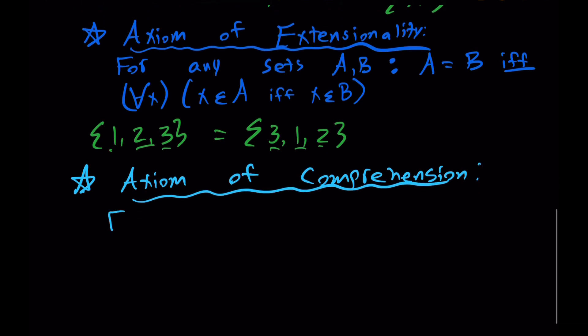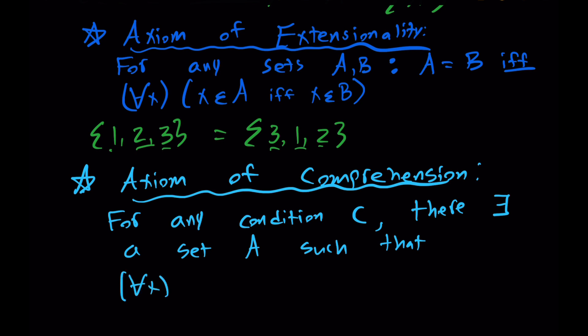We're saying that for any condition, we'll call that C, there exists (backwards E for exist) a set, let's call that A, such that for all X, X is an element or member of set A if and only if X satisfies the condition C.